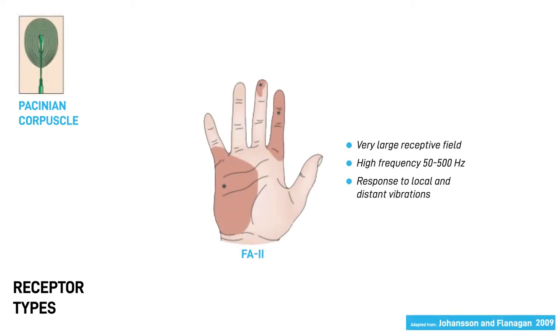Pacinian corpuscles are fast-adapting type 2 or FA2 receptors. They have the largest receptive fields that enable them to sense more remote events on the body. They have a large bandwidth of 50 to 500 Hz and they can sense local and distant vibrations.